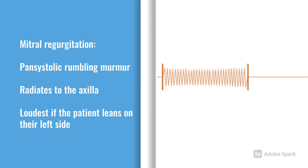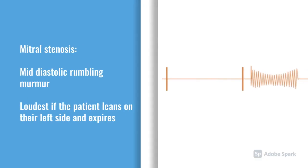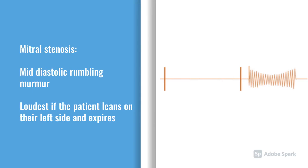Aortic regurgitation gives an early diastolic decrescendo murmur, and it's loudest if the patient sits forward and holds on expiration. Mitral stenosis is a mid-diastolic rumbling murmur, and that's loudest if you lean the patient onto the left side and get them to expire.